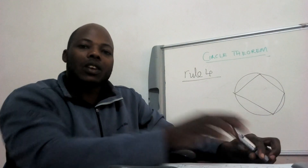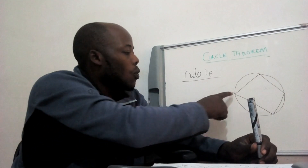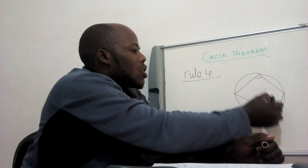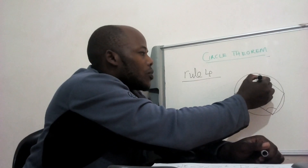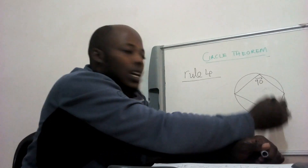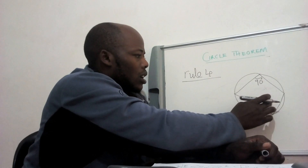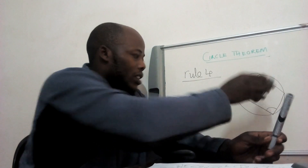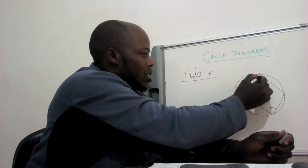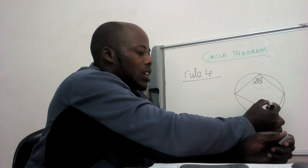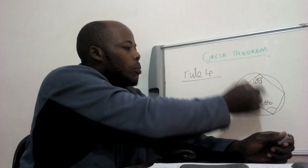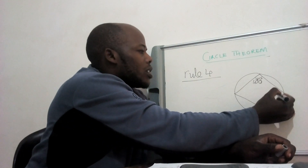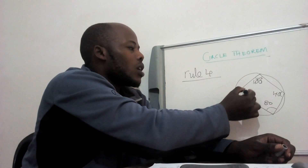Let's try rule number four. Inside the circle there is what we call a cyclic quadrilateral. For this quadrilateral, opposite angles add up to 180 degrees. So if this is 100 degrees, the opposite angle must be 80 degrees. If this is 40 degrees, the opposite angle is 140 degrees.